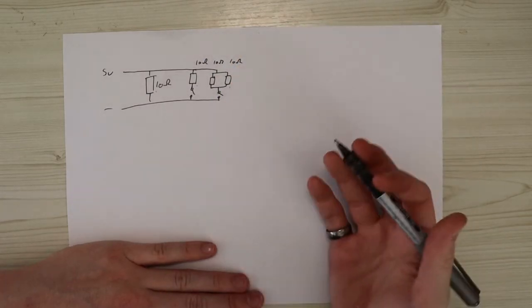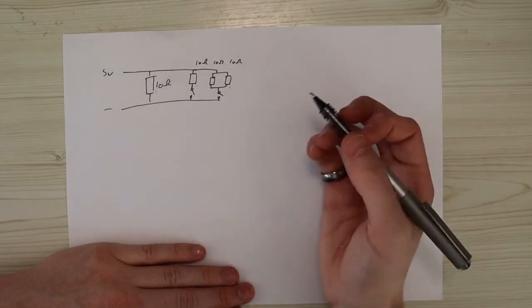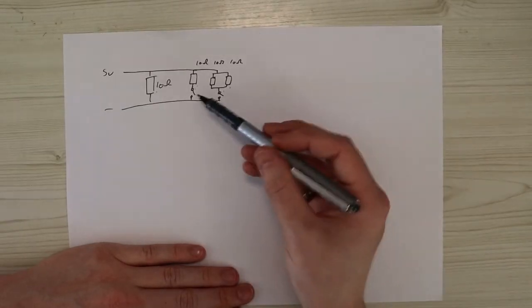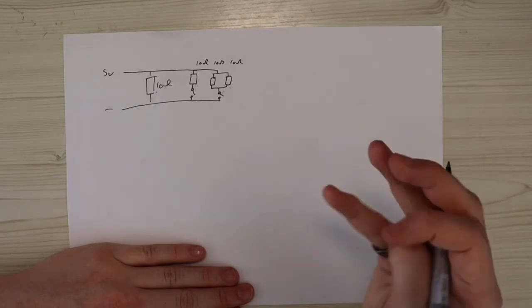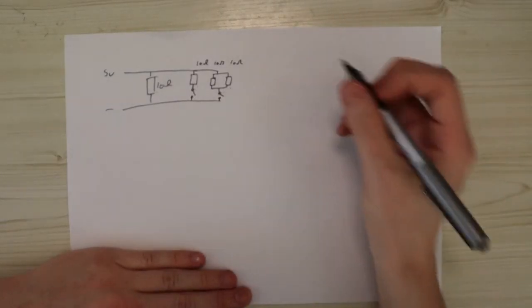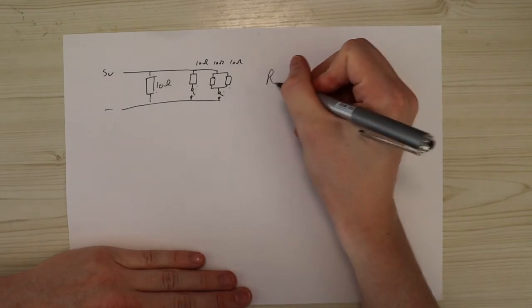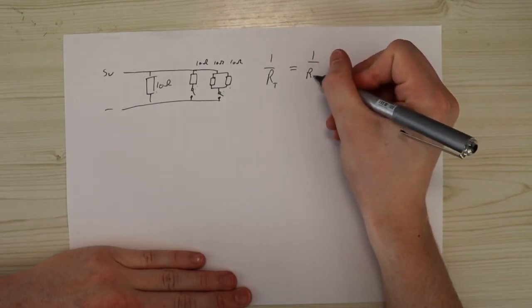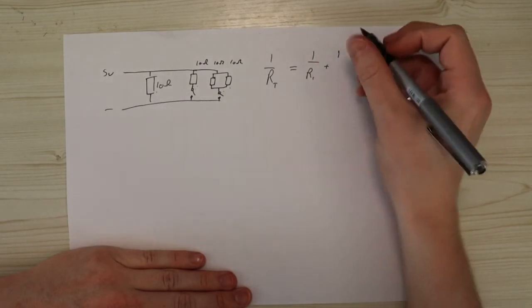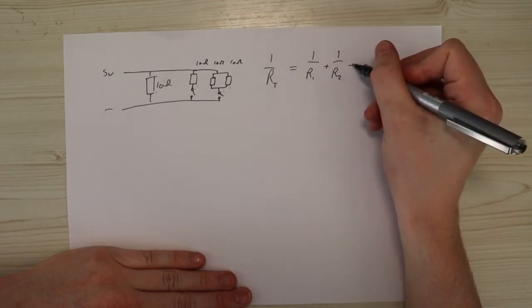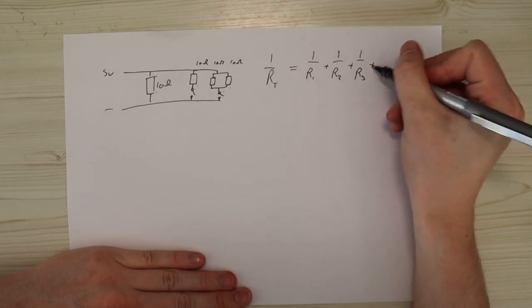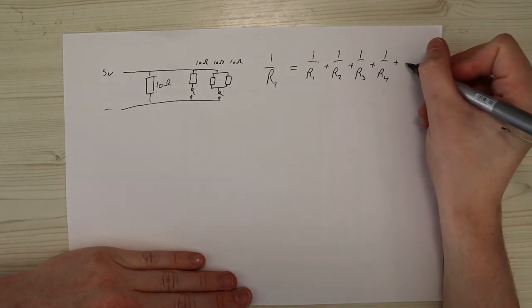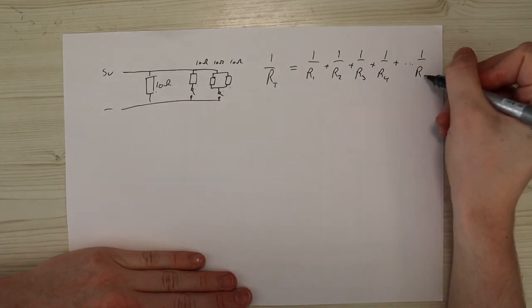So how do we work out the total resistance? And then we can work out what the current is going to be. Over when I've got this one on, this one on, this one on. Or these two on. Or those two on. Or three on. So how do we do this? It's quite simple. We use the equation. One over the total resistance equals one over resistor one. Plus one over resistor two. Plus one over resistor three. Plus one over resistor four. And if you've got more resistors than me, then you can just obviously carry on until you get to one over resistor N.